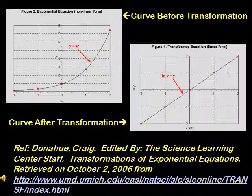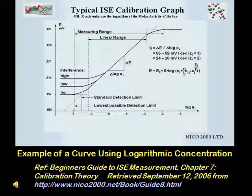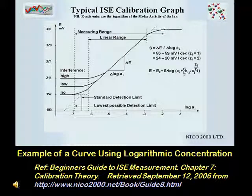Here we have an example of an exponential curve before and after transformation to linear. Here we also have an example of a typical ion-selective electrode calibration showing the use of data transformation.